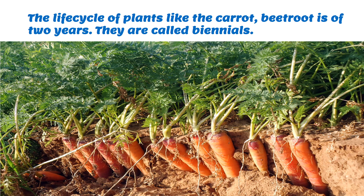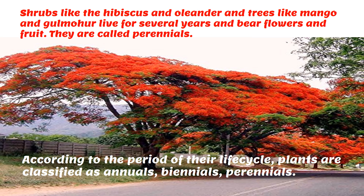The life cycle of plants like the carrot and the beetroot is two years, so they are called biennials. Plants with a life cycle within one year are called annuals, and those that live for two years are called biennial plants. Shrubs like the hibiscus and oleander, and trees like mango and gulmohar, live for several years and bear fruits and flowers for many years, so they are called perennials. We have now learned a new way of classifying plants based on how long they live. According to the period of their life cycle, plants are classified as annuals, biennials, and perennials.